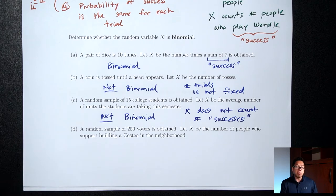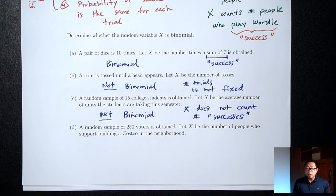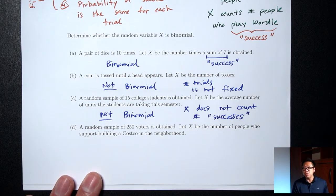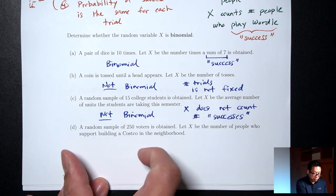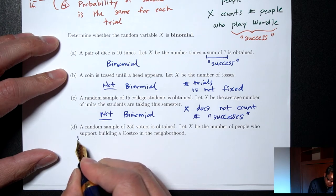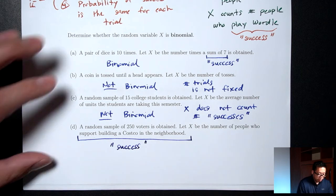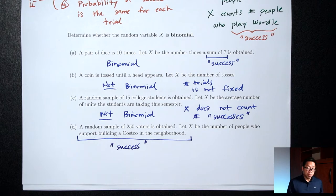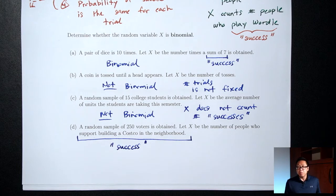Part D: a random sample of 250 voters is obtained. Is the number of people fixed? Yes — 250. The number of trials is fixed. Are we counting the number of people with a certain characteristic? X here is the number of people who support building a Costco in a neighborhood. Yes — we are counting the number of people with a certain characteristic. Supporting building a Costco is the success we're counting. This would be a binomial random variable.